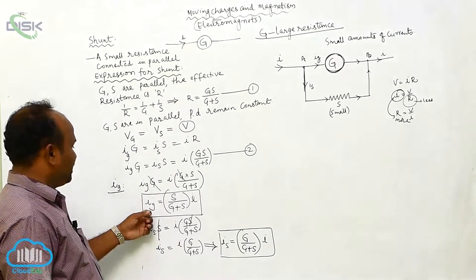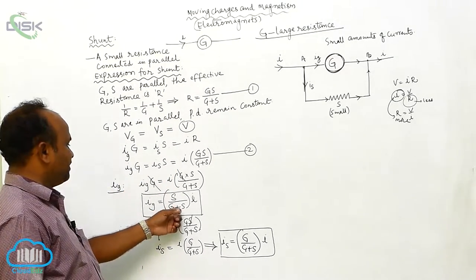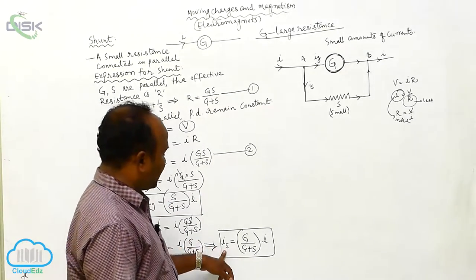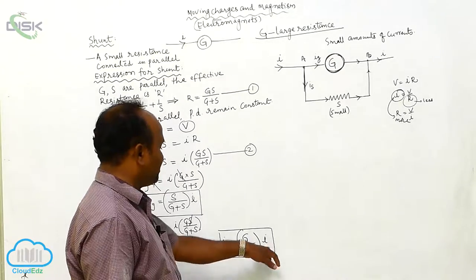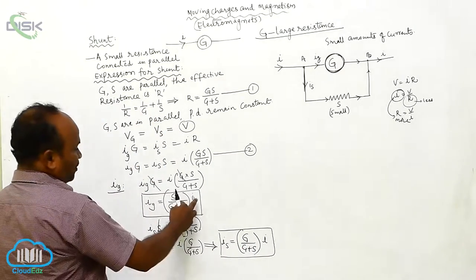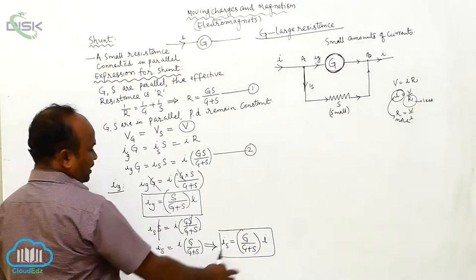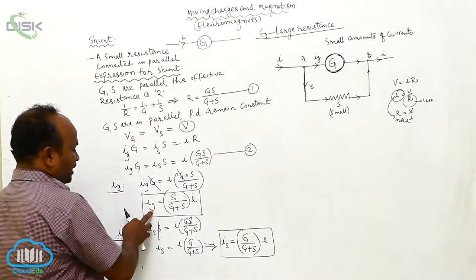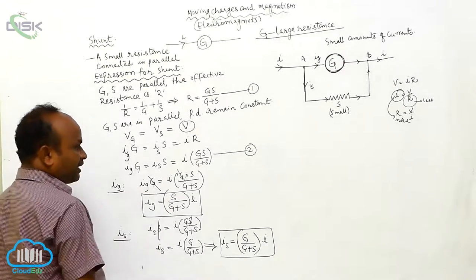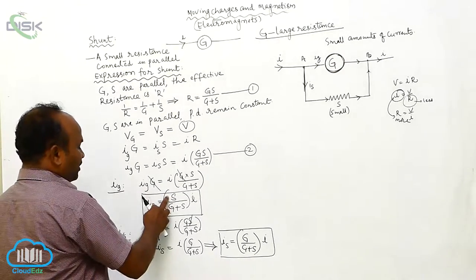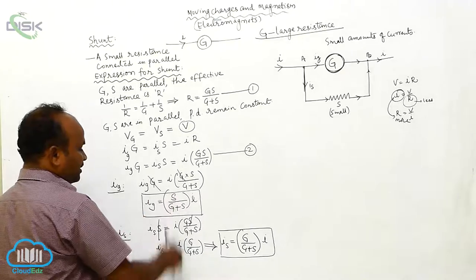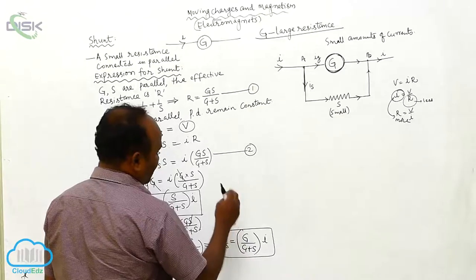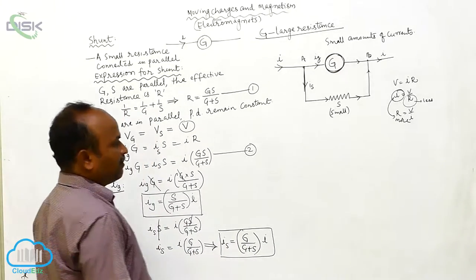The current passing through the galvanometer Ig is equal to S by (G plus S) into I. The current passing through the shunt is equal to G by (G plus S) into I. Here it is total current by total resistance in both cases. While calculating the galvanometer current, you want to take into consideration the shunt resistance. While calculating the shunt current, you want to consider the galvanometer resistance.